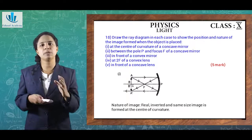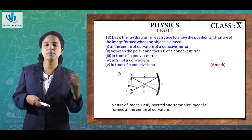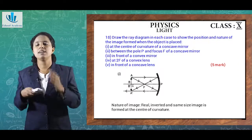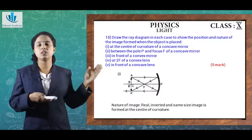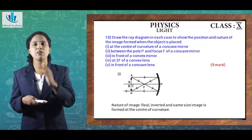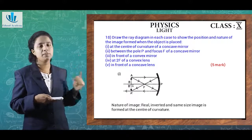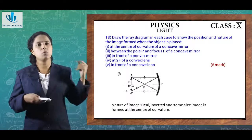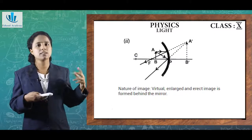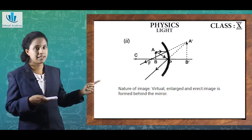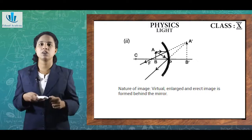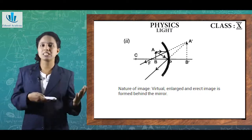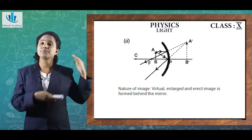When the object is placed between the pole P and the focus F of a concave mirror: rays from object AB strike the mirror, and when the reflected rays are extended behind the mirror, the image A'B' is formed on the other side — behind the mirror. The image is virtual, erect, and enlarged.